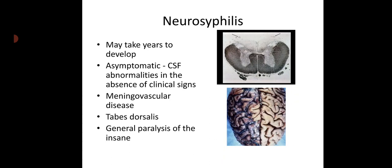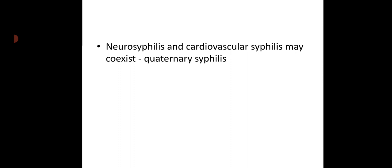Neurosyphilis also takes years to develop. It can be either asymptomatic — with CSF abnormalities but absence of clinical signs — or meningovascular disease can occur. Other features are tabes dorsalis and general paralysis of the insane. Neurosyphilis and cardiovascular syphilis may co-exist, and that combination is called quaternary syphilis.